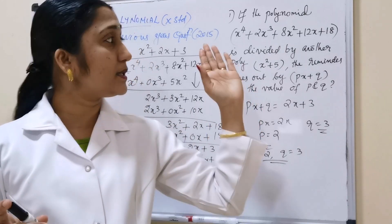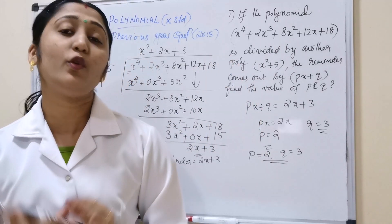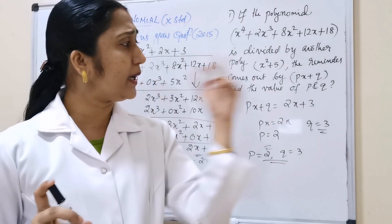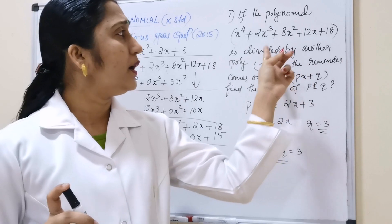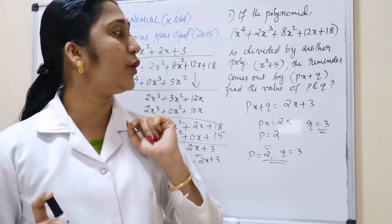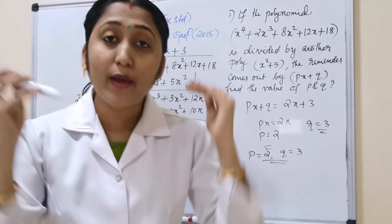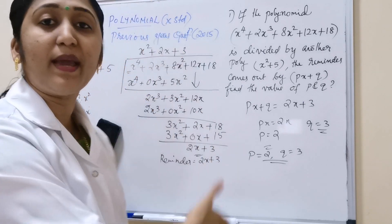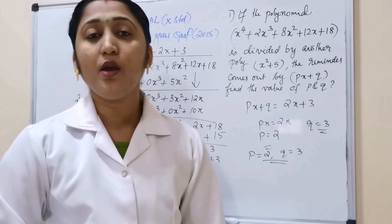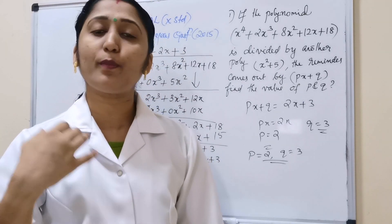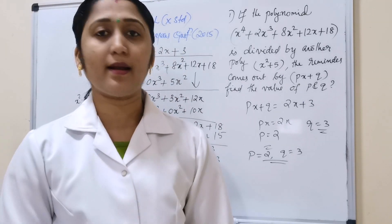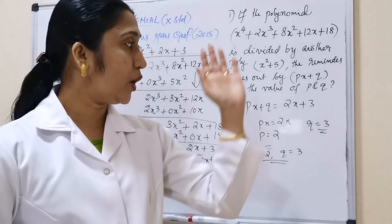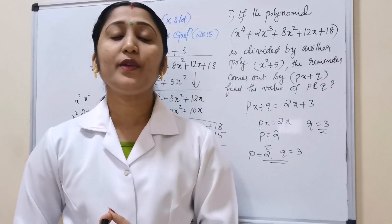If you get this type of problem, think about how to divide and how to get p and q. Here p and q are not directly in the polynomial — it is very easy once you practice. You have to practice more problems based on this and you will get an idea. I will do more problems on my channel also, so keep watching.